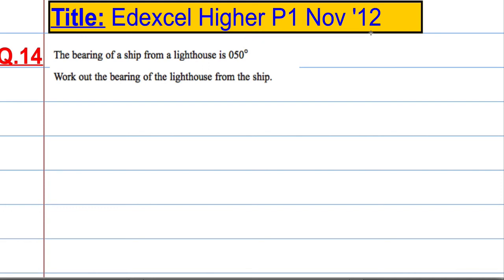Okay, question 14. The bearing of a ship from a lighthouse is 050 degrees. Work out the bearing of the lighthouse from the ship.